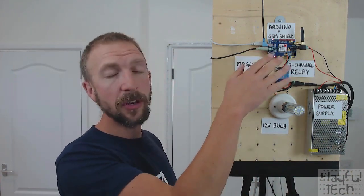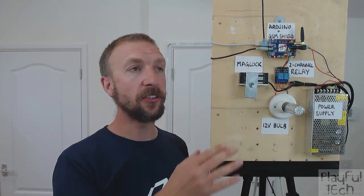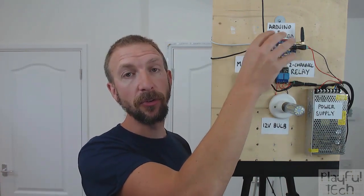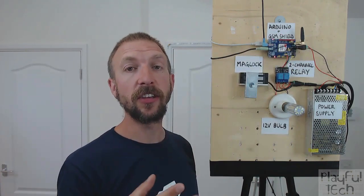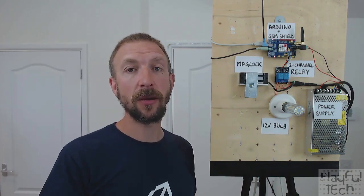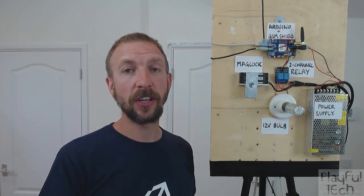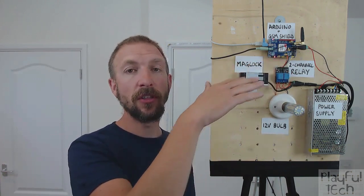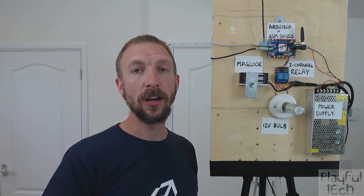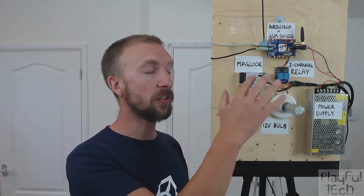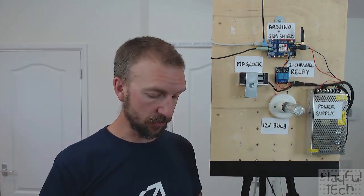The Arduino Uno is running a sketch that is constantly polling the shield to ask it if any data has been received — so if there's an incoming SMS message or an incoming phone call — and depending on things like who that message has come from, the sender, the time, or the content of the message, it can control different outputs.